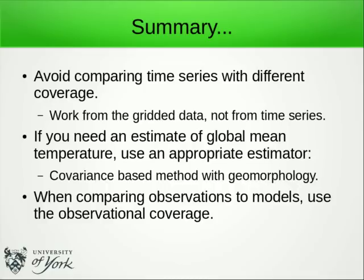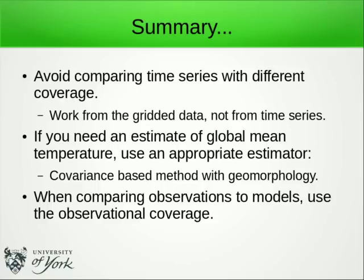To finish, some recommendations. First, avoid comparing time series derived from data with different spatial coverage — any differences may be due to differing coverage rather than anything else. Given that observational datasets all have different coverage, serious comparisons should always be made using gridded data rather than time series. Second, if you need to estimate a global mean from spatially incomplete data, use an appropriate estimator — ideally one that takes into account both covariance and geomorphology. Finally, when comparing observations to models, don't assume that using an infilled record resolves the coverage problem, especially for the early record. Covariance methods can help us make better use of the information we have, but cannot create information from nothing. Models should be compared to observations using the observational coverage.